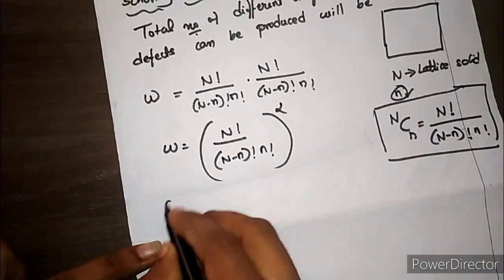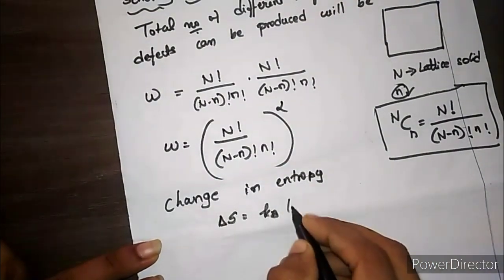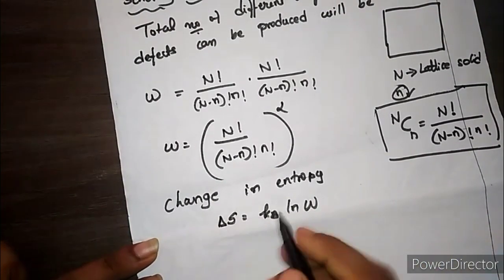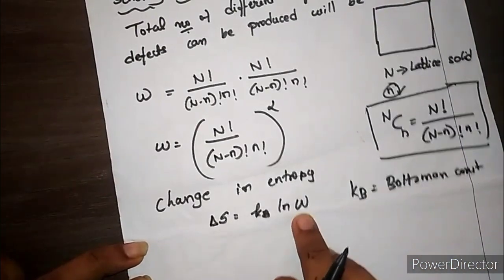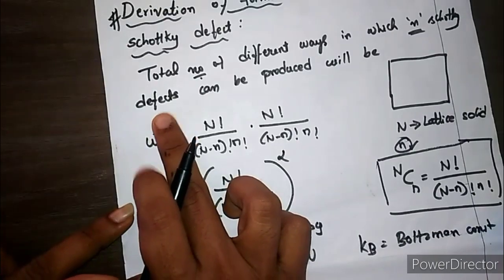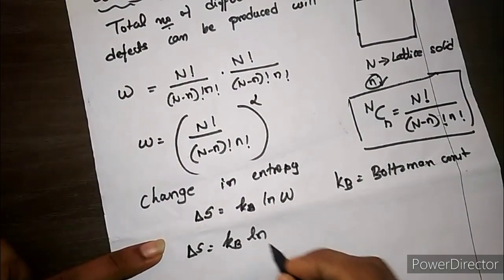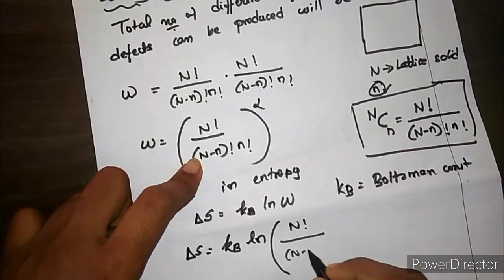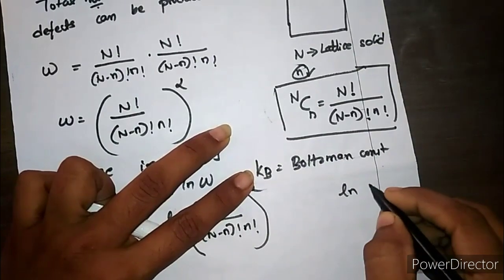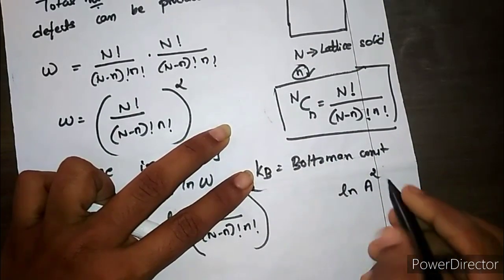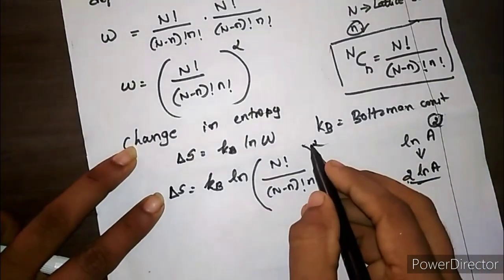Now for the change in entropy. The entropy equation is ΔS = kB · ln(W), where ΔS is the change in entropy and kB is the Boltzmann constant. Substituting W: ΔS = kB · ln([N! / ((N−n)! · n!)]²). Since ln(A²) = 2·ln(A), we can write: ΔS = 2kB · ln[N! / ((N−n)! · n!)].